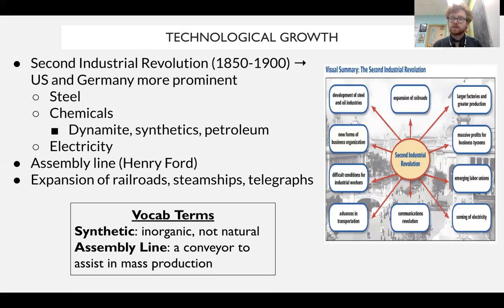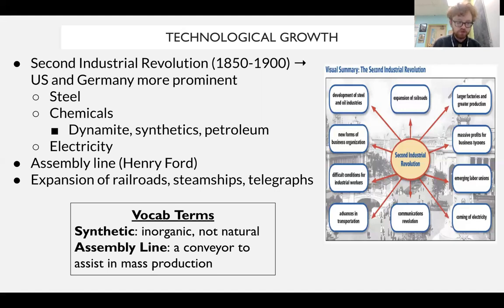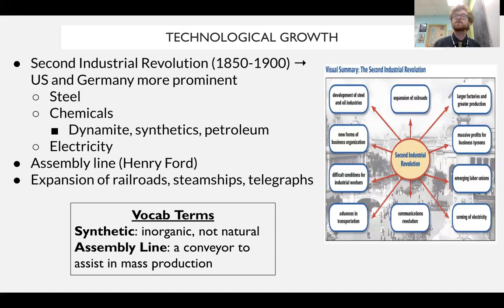Another major industry is electricity. Electricity is going to become a way of powering these industrial cities, and yet it's beyond the simple notion of power production. Electricity will be utilized in the creation of consumer products. We start to see the invention of things like the motion picture camera, the phonograph, the light bulb. So electricity is making a consumer market for goods produced with machines.